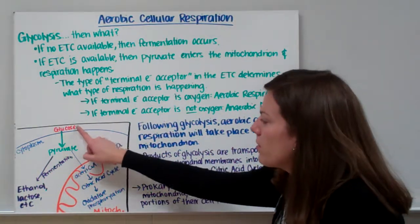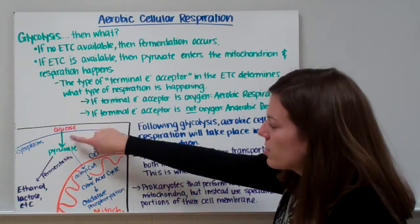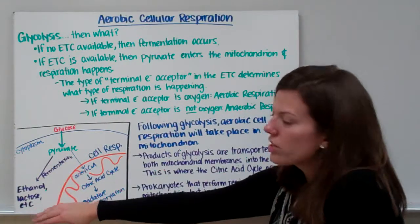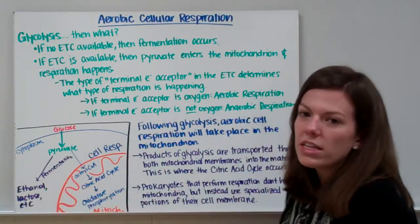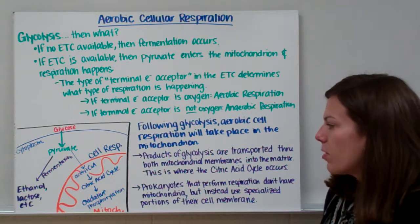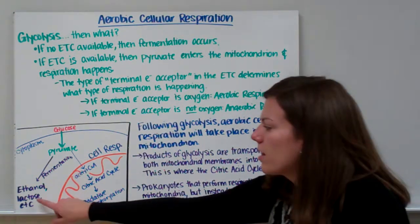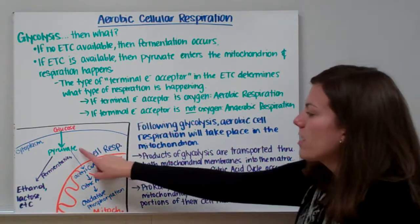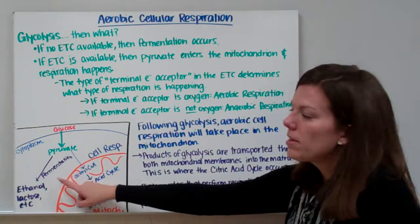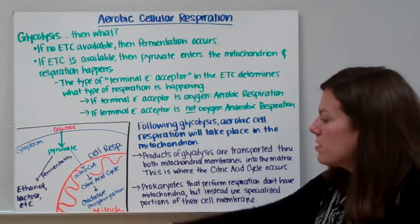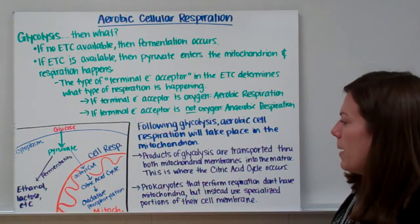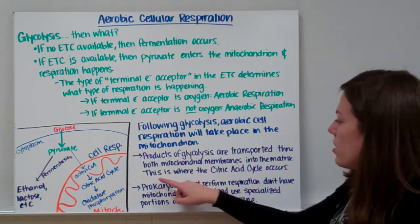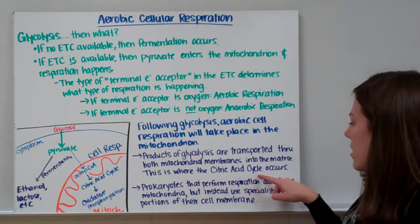We have our glucose broken down to pyruvate through glycolysis. If we don't have an electron transport chain, we go through fermentation and make a waste product like ethanol or lactic acid. If we do have an electron transport chain available, we take that pyruvate into the mitochondrion to get more ATP. The products of glycolysis are transported through the mitochondrial membranes into the matrix, where the citric acid cycle occurs.